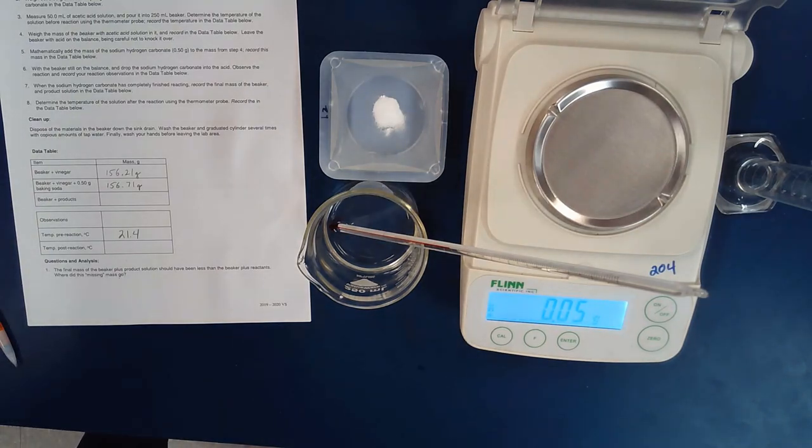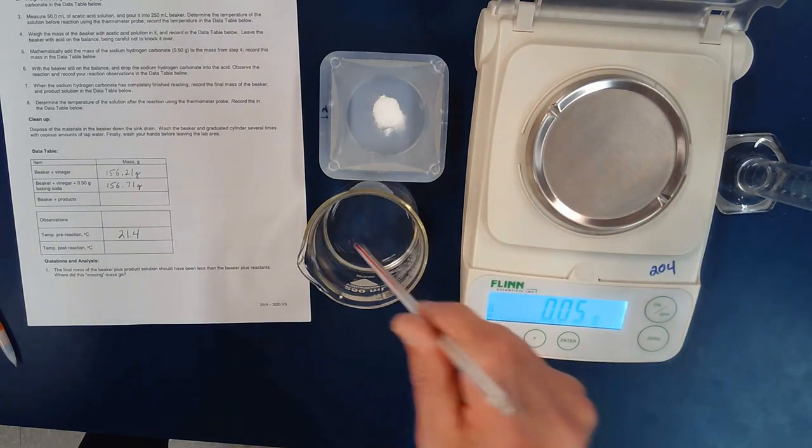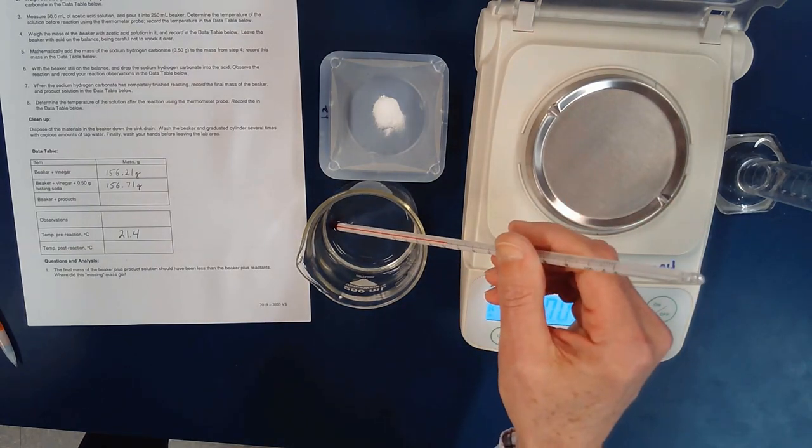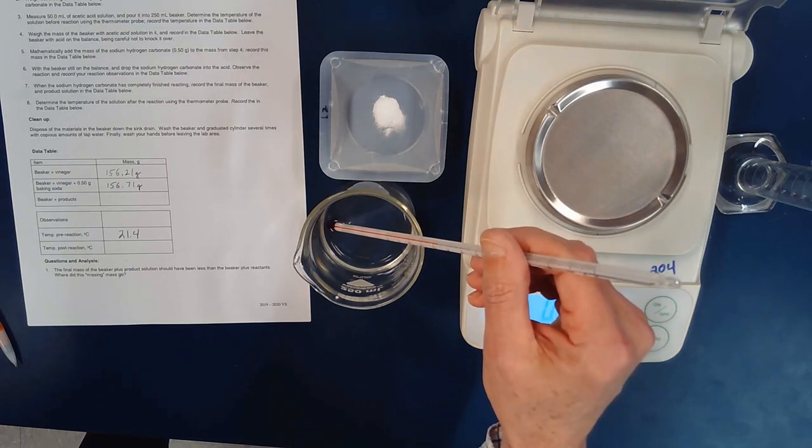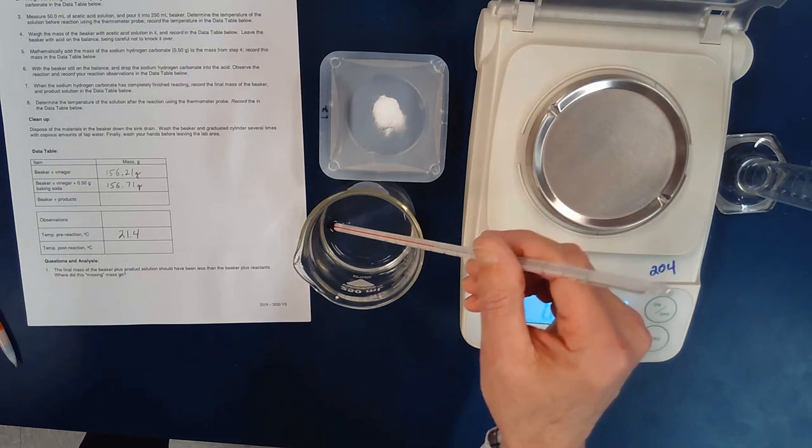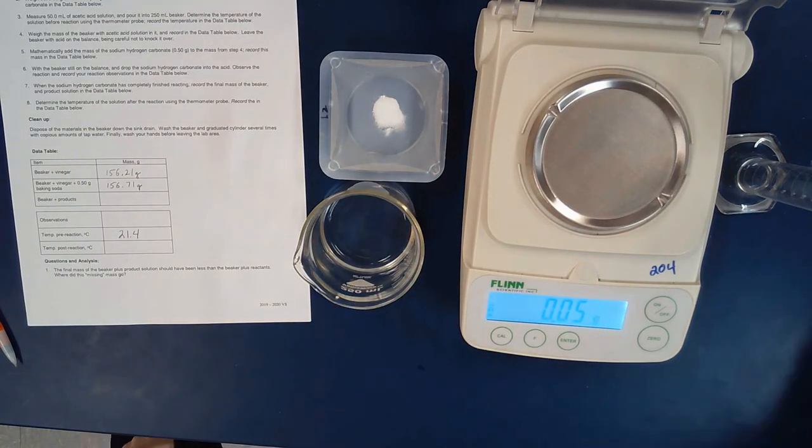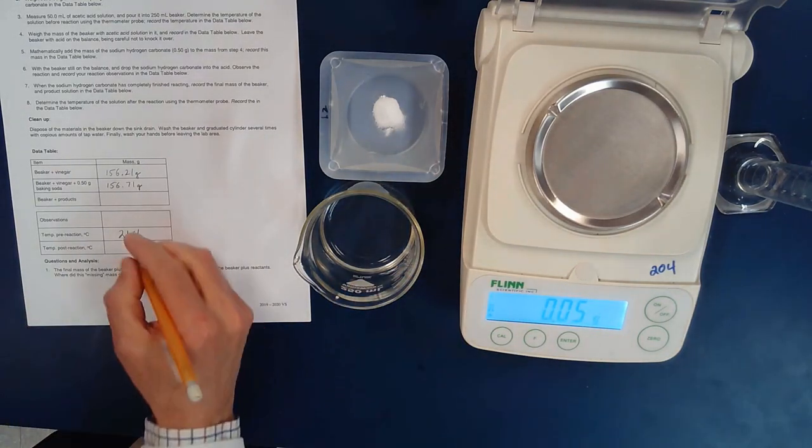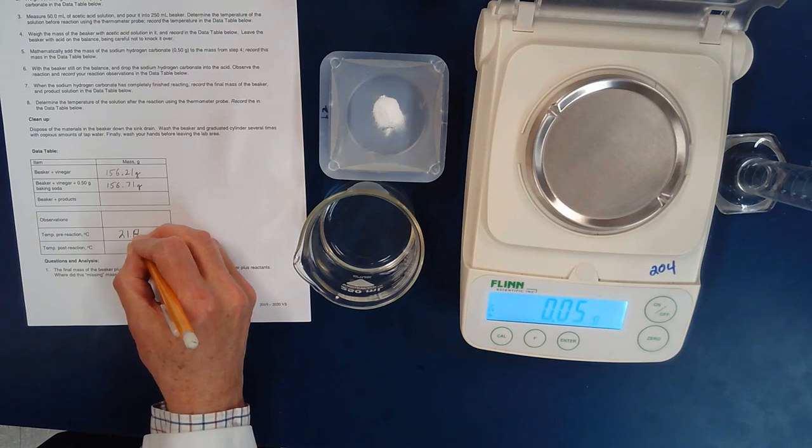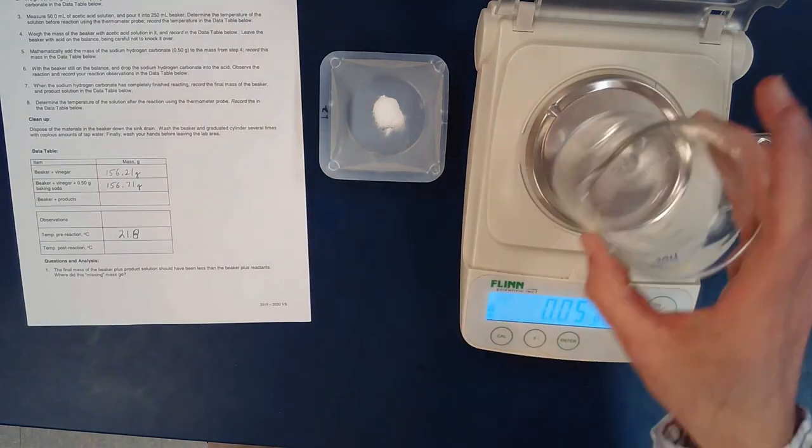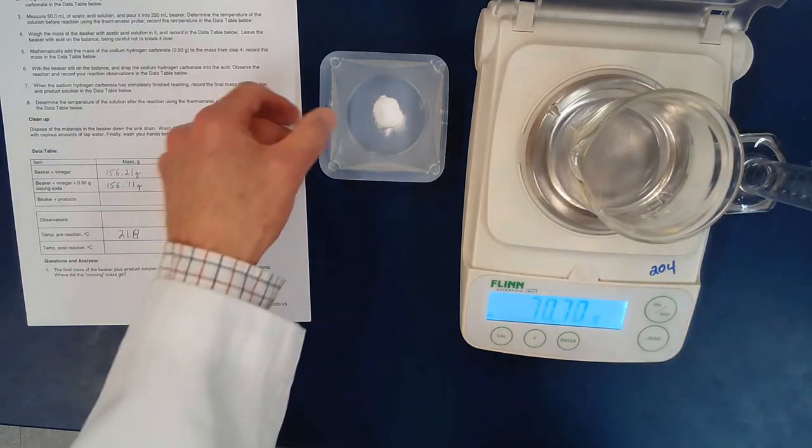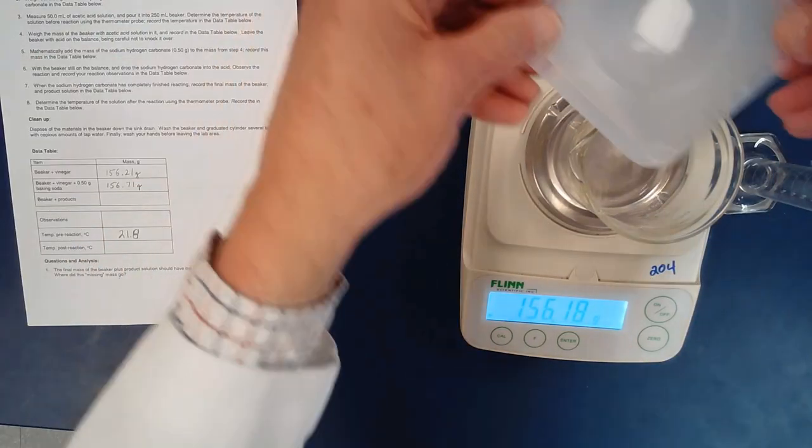Okay, the temperature is going slightly down and I am reading the temperature at 21.8 degrees Celsius. Okay, time to put the beaker back on the scale and add my 0.5 grams of baking soda.